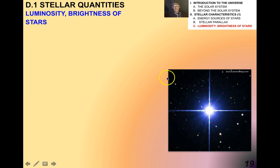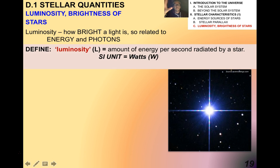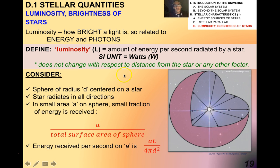Now I want to talk about luminosity and brightness of stars, which will lead into a more technical discussion when we talk about Hertzsprung-Russell diagrams in topic D.2. Luminosity, as you've probably surmised, is how bright a light is. In astronomy, luminosity has the variable capital L, and it's simply the amount of energy per second radiated by a star. Because it's energy per second, it has units of watts. This does not change with respect to distance from the star — it doesn't matter how far away you are, it's still putting out the same amount of energy per second.